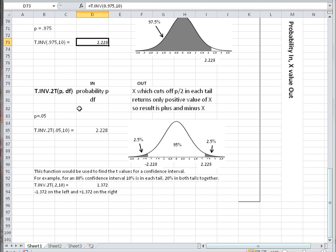The two-tailed version of these functions is probably the one that's used the most often. It returns the x value which cuts off p over 2 in each tail. It returns only the positive values of x, so the minus value is understood.